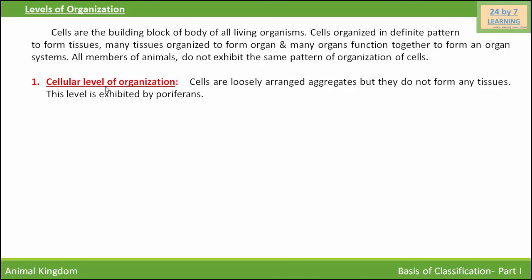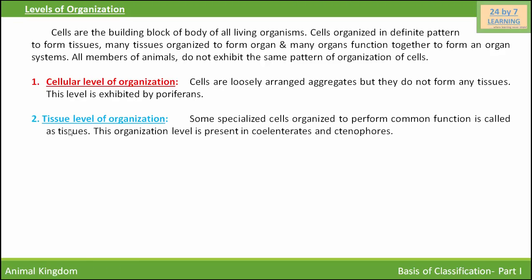Animals may possess cellular level, tissue level, organ level, or organ system level of body organization. At the cellular level of body organization, cells are loosely arranged but do not form any tissue — tissues are not found at this level. This level is exhibited by Porifera.